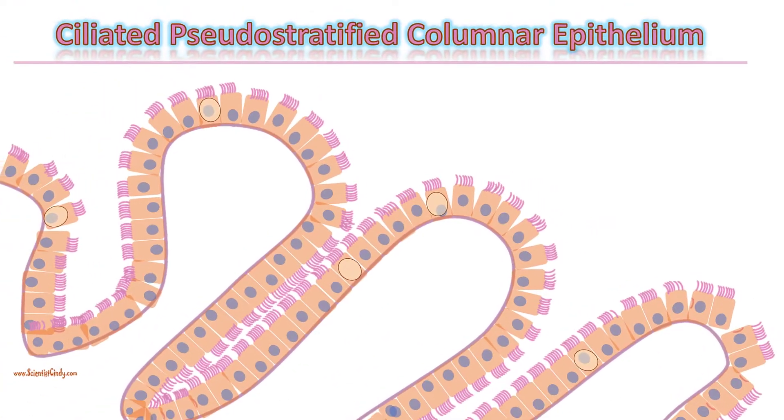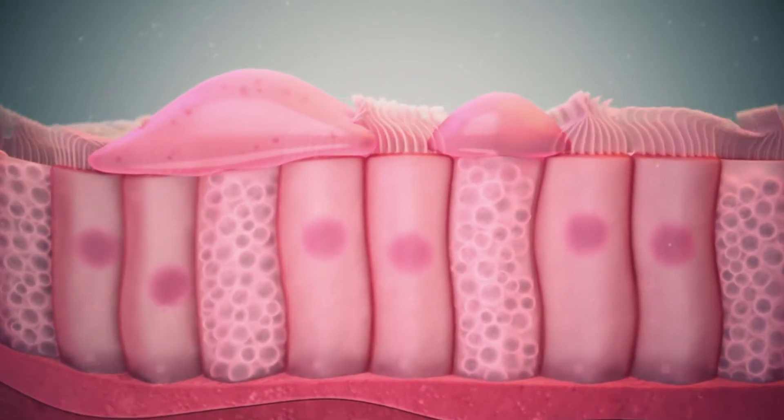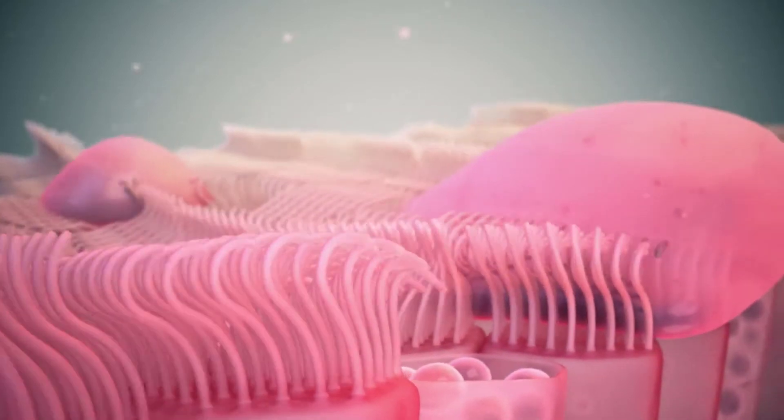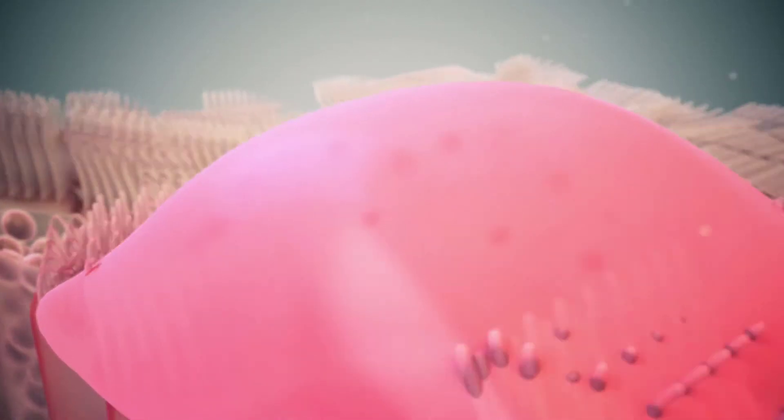Simple columnar epithelium forms the lining of some sections of the digestive system and parts of the female reproductive tract. Ciliated columnar epithelium is composed of simple columnar epithelial cells with cilia on the apical surface. These epithelial cells are found in the lining of the fallopian tubes and parts of the respiratory system where beating of the cilia helps to remove particulate matter.